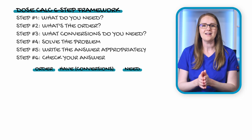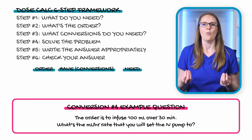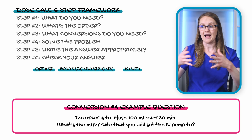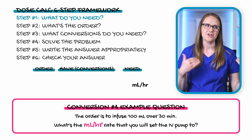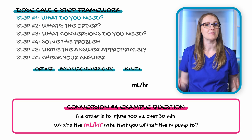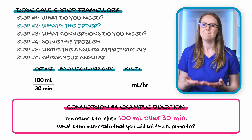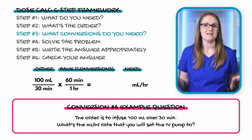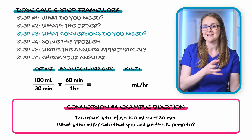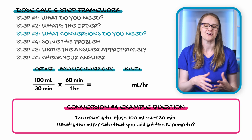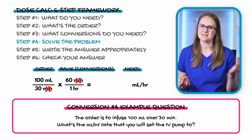The order here is to infuse 100 milliliters over 30 minutes. What milliliters-per-hour IV rate will you set this pump to? Step one: we need milliliters per hour. Step two: the order is 100 mL over 30 minutes. Step three: we need to get from minutes to hours, so we use the conversion 60 minutes equals one hour. Then step four: multiply across the top and bottom and divide.